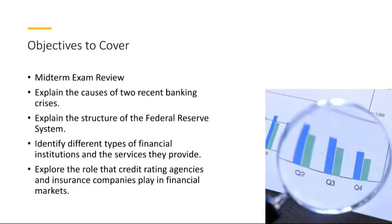We'll also be delving into the backbone of the U.S. financial system, that is the Federal Reserve System. Established in 1913, the Fed comprises 12 regional banks, working in tandem with the Board of Governors in Washington, D.C. This institution plays a critical role in regulating monetary policy, including interest rates, controlling inflation, and fostering economic stability on a national scale.